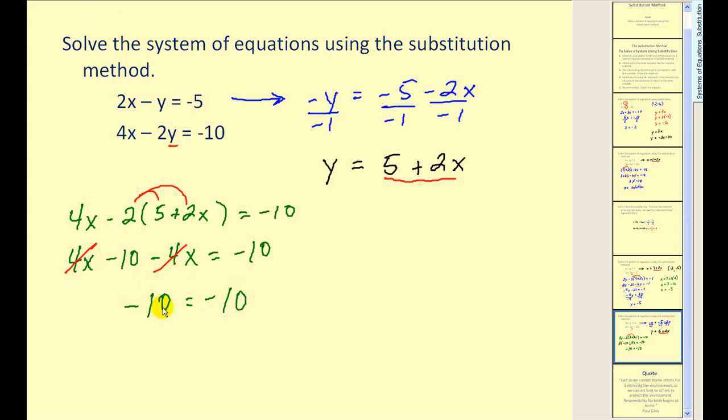So when the variable is simplified to zero but the result is a true statement, that's what happens algebraically. We have an infinite number of solutions. And if you recall, if we were to graph these two lines, they would actually be the same line. Let's show that.